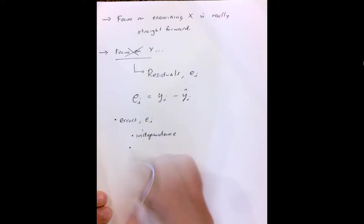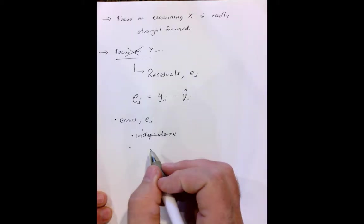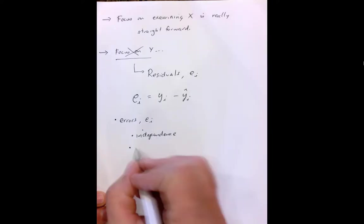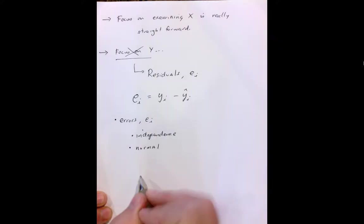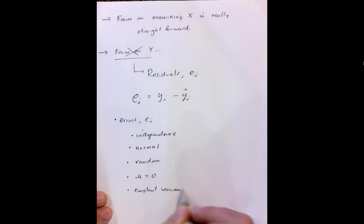We want independent errors. We want the errors to be normal. We want our errors to be random. We want the mean of the errors to be zero. And we want constant variance. Constant variance means we don't have any wackiness at each level of X of our predictor. We don't have normal distributions at that level that have different shapes.